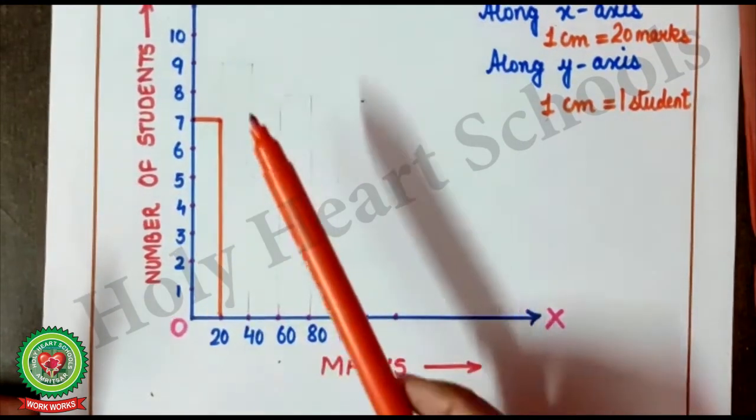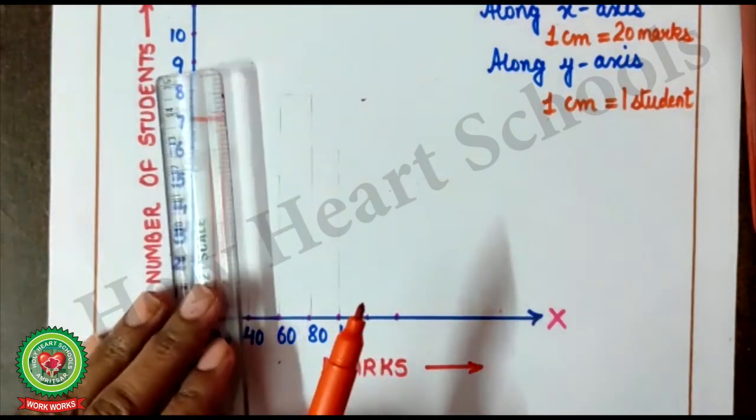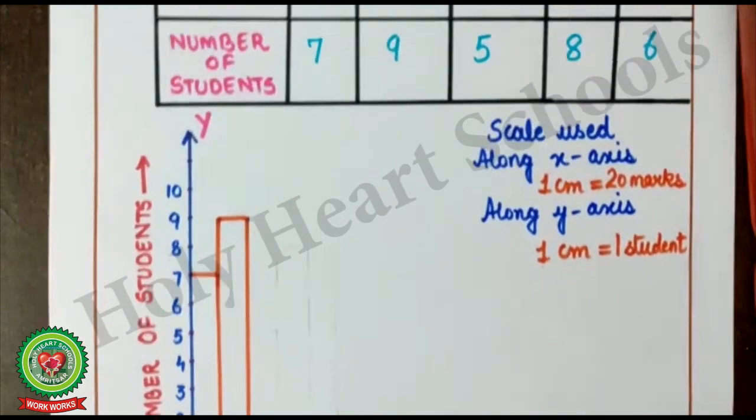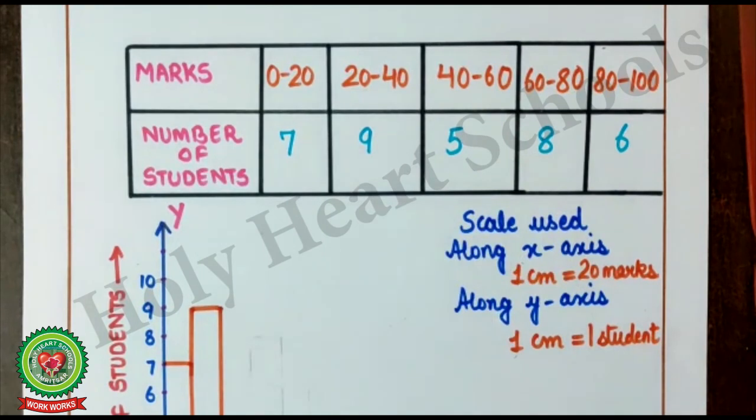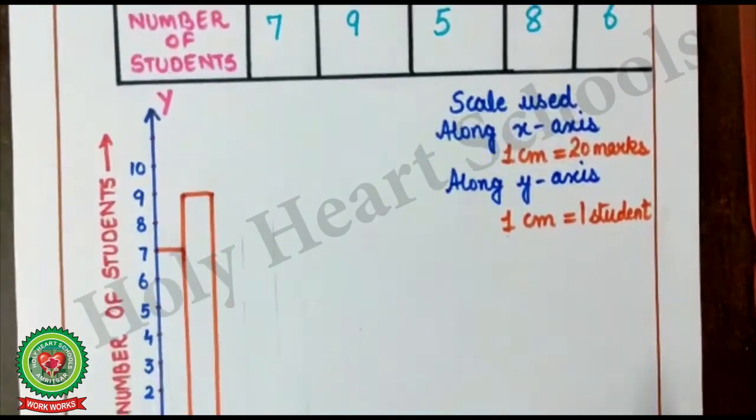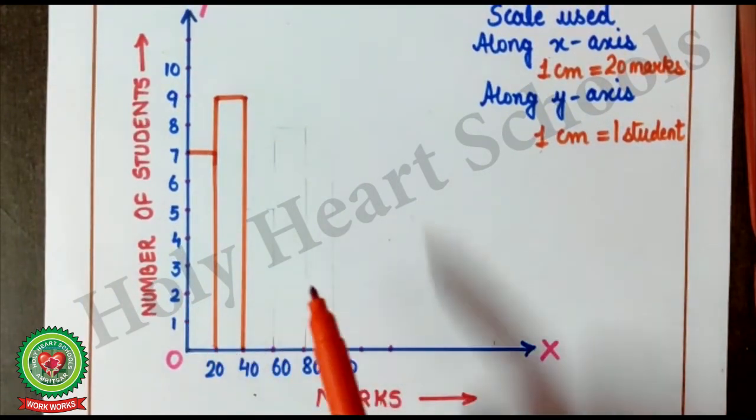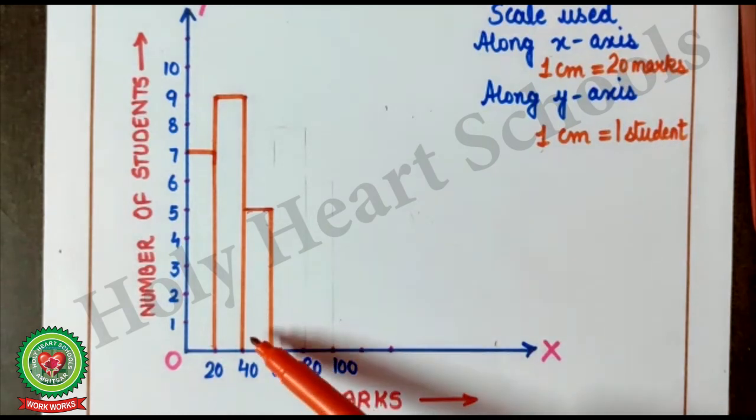Now, we have to draw bar till 9. Here, 20 to 40. We will draw till 9. So, let's draw next bar till 9. So, now, as you can see, 20 till 40. Height of the bar is 9. And, there is no gap between these two bars. Now, the next information is 40 till 60. 5 number of students. Now, 40 till 60. Here, this is 40 till 60. We have to draw till 5. So, here, as you can see, next bar till 5.